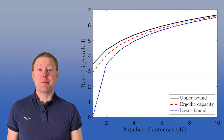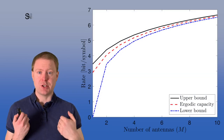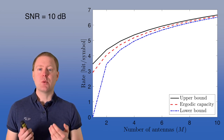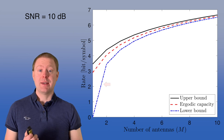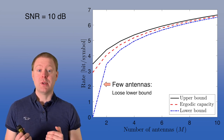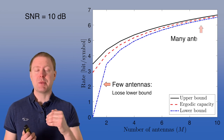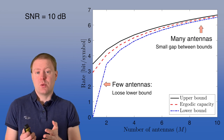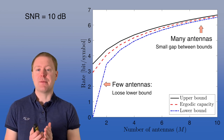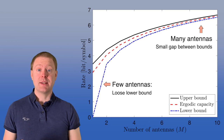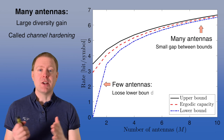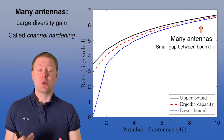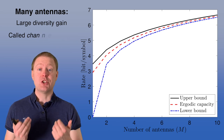Here is an example of the rate in bits per symbol for different numbers of antennas at SNR = 10 dB. The red curve is the IID Rayleigh fading ergodic capacity, the black curve is the upper bound achieved with a non-fading channel, and the blue curve is the lower bound. The lower bound is a poor bound at low antenna counts, but eventually becomes very close to the upper bound. When we have around five antennas, the gap is very tiny — because of the large diversity gain from many antennas, the fading variations average out. This is also called channel hardening.